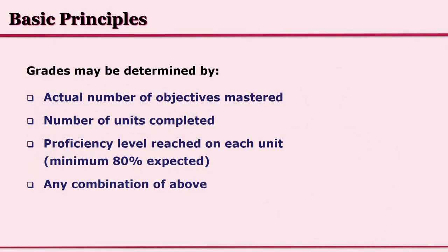The next basic principle of mastery learning is grades. Grades may be determined by the actual number of objectives mastered, the number of units completed, the proficiency level reached on each unit — with a minimum of 80% expected — or any combination of these. It becomes our responsibility to decide grades of students on these bases rather than on normal probability rankings.